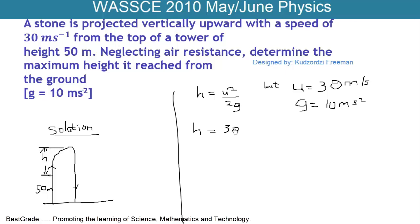So by substitution, H is equal to 30 squared over 2 times 10. And you know 30 squared is equal to 900, and 2 times 10 is 20.